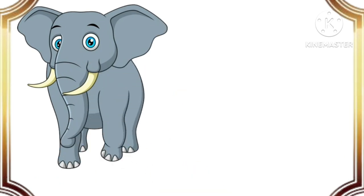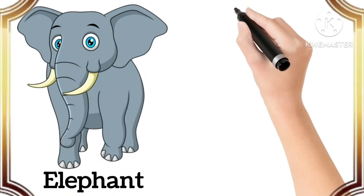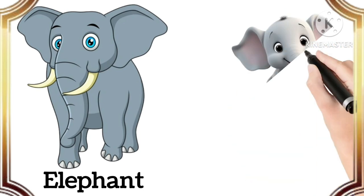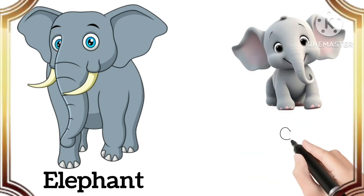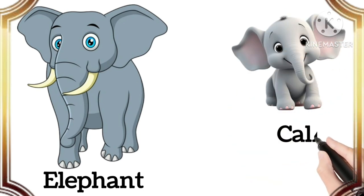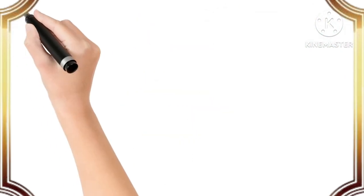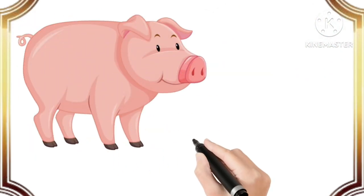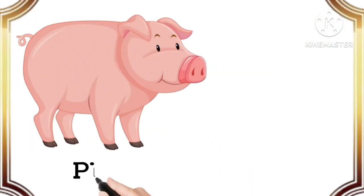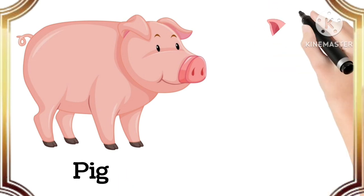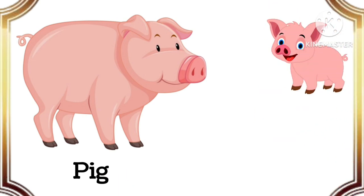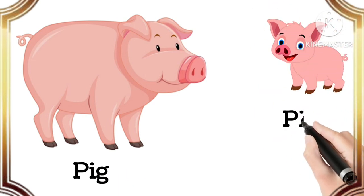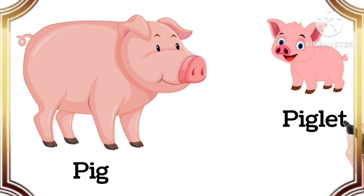Elephant. The baby of elephant is calf. Calf. Pig. The baby of pig is piglet. Piglet.